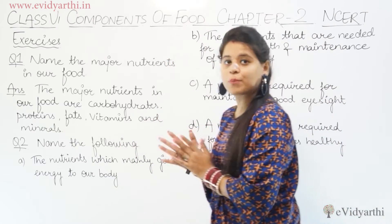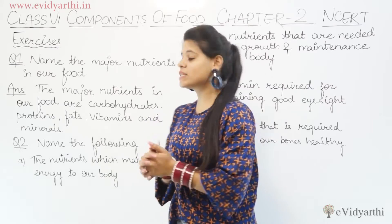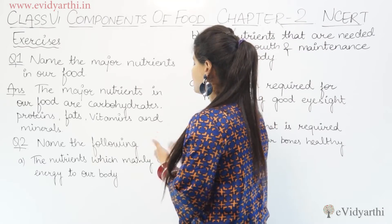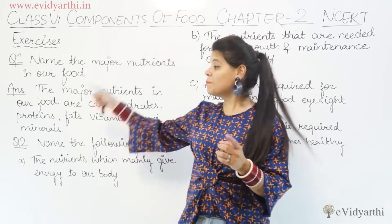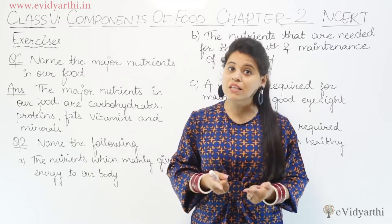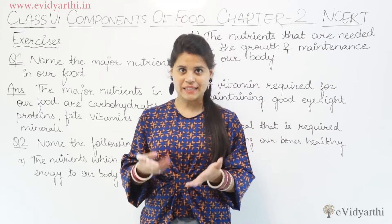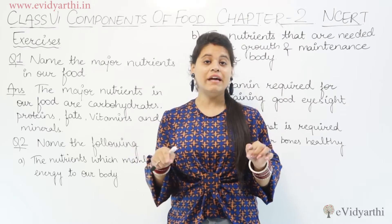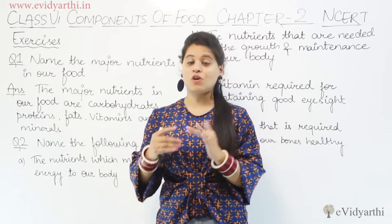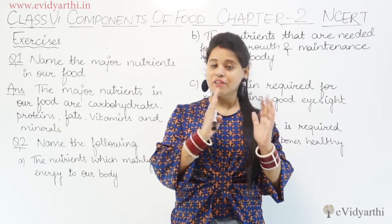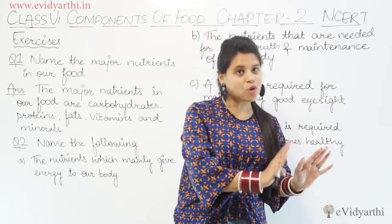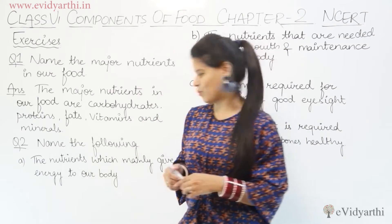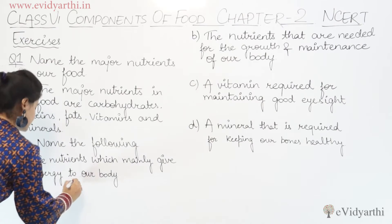Name the following. The first one is: the nutrients which mainly give energy to our body. Now, among these five nutrients, which is most important for energy? We discussed the first category — energy-giving nutrients — which are carbohydrates and fats. Fats are stored energy, but here we will mention carbohydrates because they are instant energy providers. So the answer is carbohydrates.